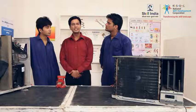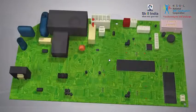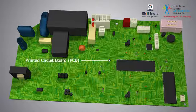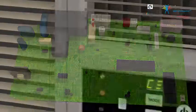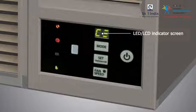Now see the electronic parts. The electronic parts of an AC are printed circuit board or PCB and LED or LCD indicator screen.